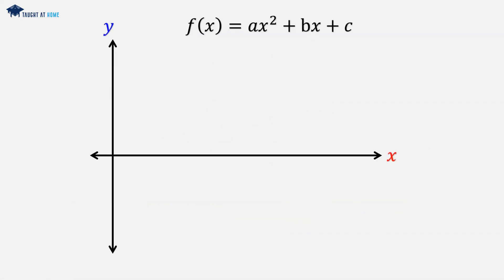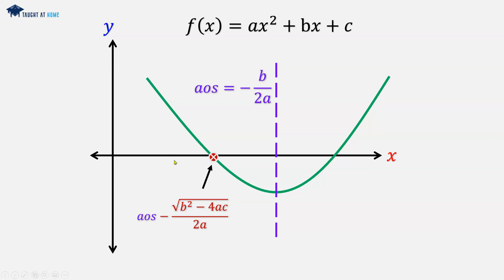So if we have a look at a generic quadratic function, then we're going to have the axis of symmetry through the center which is given by minus b over 2a. We're going to have our first root which is the axis of symmetry take away the square root of b squared minus 4ac over 2a fraction. Then we're going to have our second root which is the axis of symmetry plus square root of b squared minus 4ac over 2a fraction.